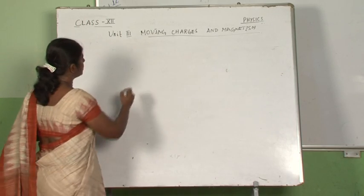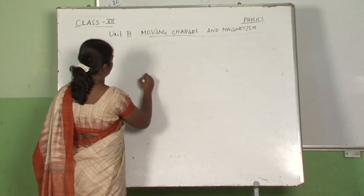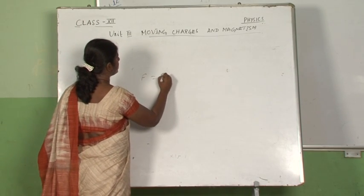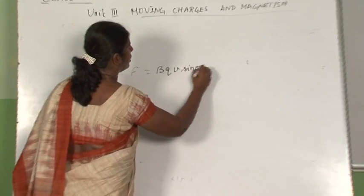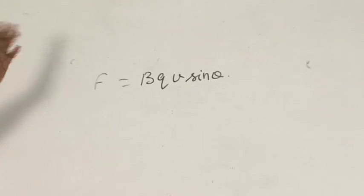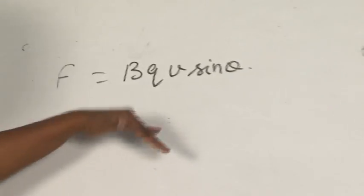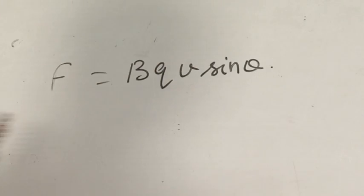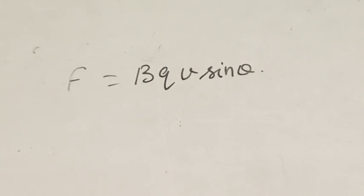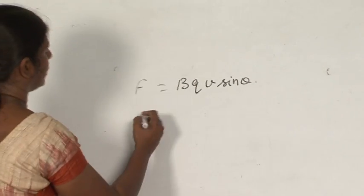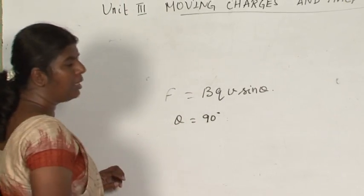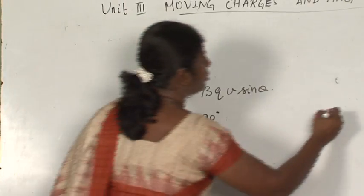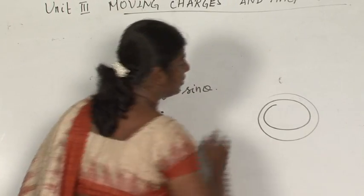Till now what we learnt? F is equal to BQV sin theta. If the charge is moving with velocity V and the angle is perpendicular, that is BQV sin theta. When theta is equal to 90 degrees, the charge will move in a circular path.